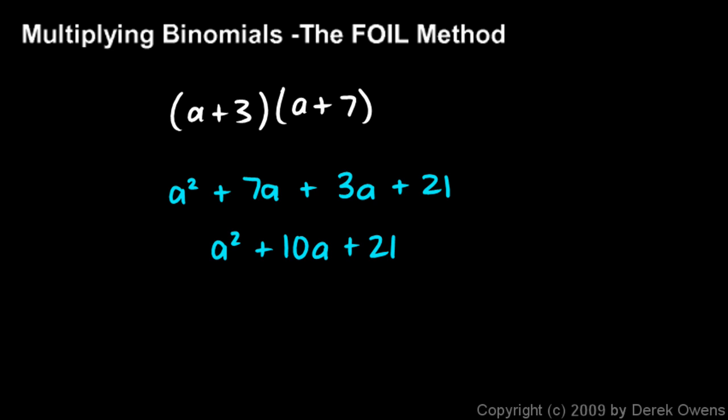So the FOIL is just a method for getting each term from one binomial multiplied by each term from the other. We said earlier that is the main idea - we need to make sure each term from one binomial is multiplied by each term from the other, and FOIL gets us there.